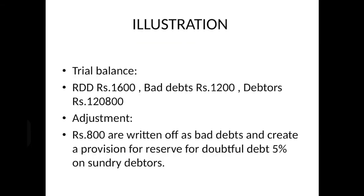Let's take an illustration based on this adjustment, which is extremely important. In the trial balance, you are given RDD 1,600, bad debts 1,200, and debtors 1,20,800. In the adjustments, 800 is written off as bad debts — that is new bad debts — and you have to create new RDD at 5% on sundry debtors. Read the sum carefully: three items are given in the trial balance — RDD, bad debts, debtors — and new bad debts and new RDD are given in the adjustments as a percentage.